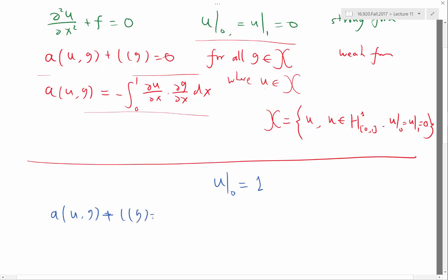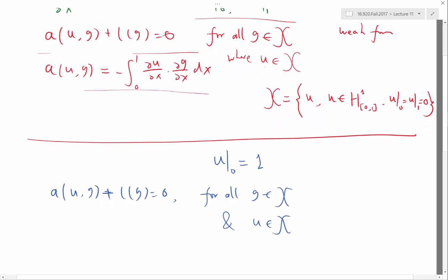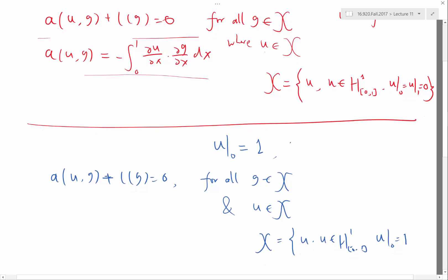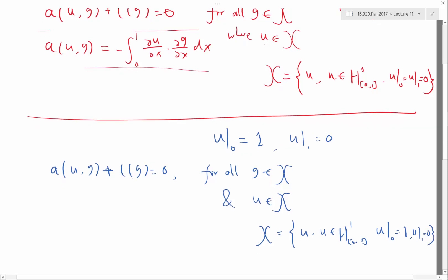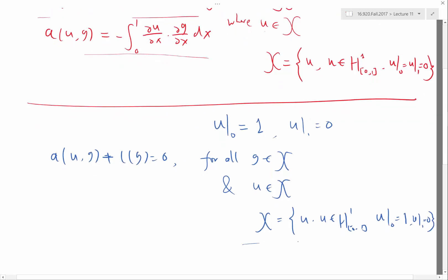Can we just modify the weak form of the statement so that we have exactly the same weak form, a(u,g) plus l(g) equal to 0, for all g inside the same X, and u also has to be in the same X, where we define X to be all the u's where u still have to be in the same Sobolev space, but now u at 0 equal to 1. Let's say u at 1 equal to still 0. Can I just modify the boundary condition definition in the space?